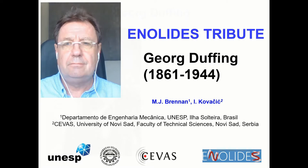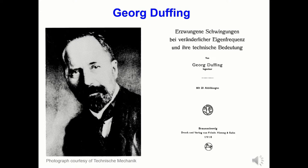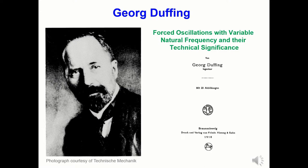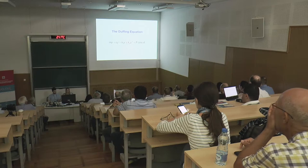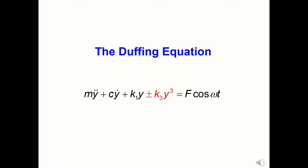George Duffing was a German engineer and scientist. He lived for 83 years, spanning the 19th and 20th centuries, and is famous for the book that he wrote 100 years ago in 1918. The book is entitled in English, 'Forced Oscillations with Variable Natural Frequency and Their Technical Significance.' This is the equation named after Duffing — it is the term in red, plus or minus k3y cubed, that distinguishes it as the Duffing equation.